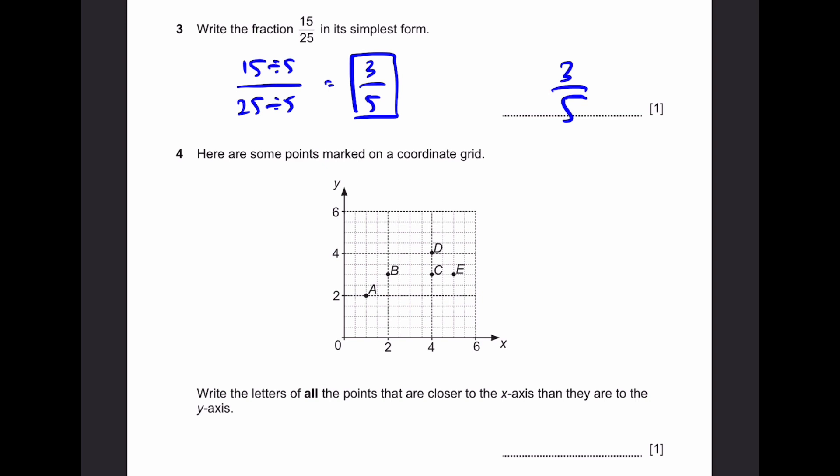Question 4, here are some points marked on the coordinate grid. Write letters of all the points that are closer to the x-axis than the y-axis. That means if you write down coordinates, the x value has to be greater than the y value, only then it's closer to the x-axis. For A, the x value is 1, the y value is 2. So it's 2 units from the x-axis, 1 unit from the y-axis, and A is not counted.